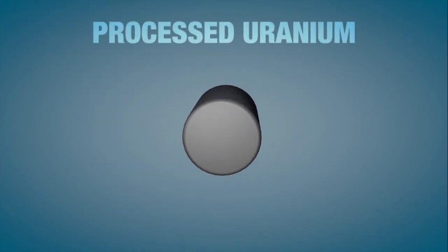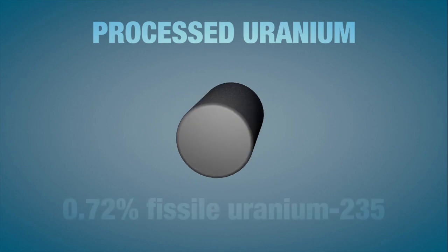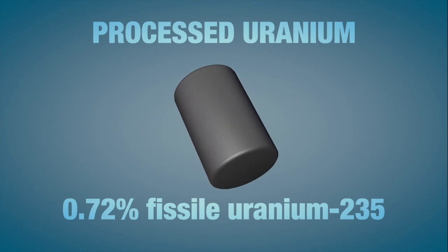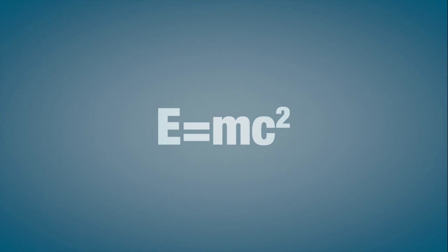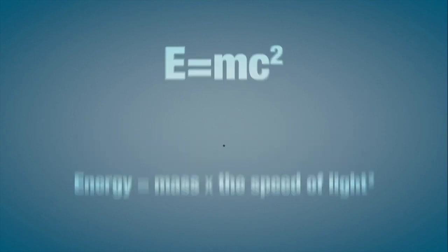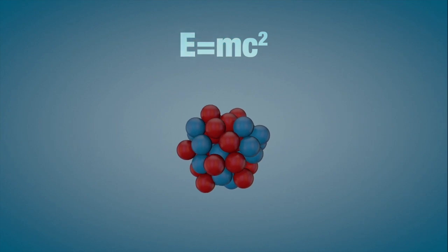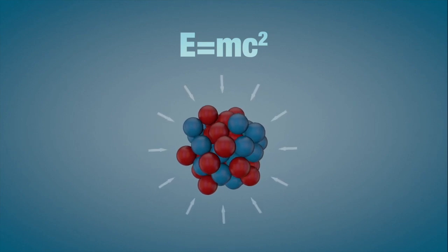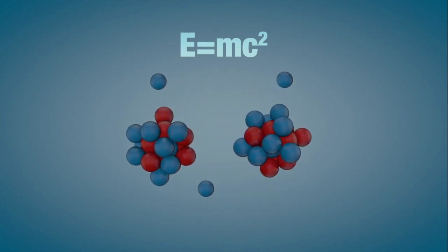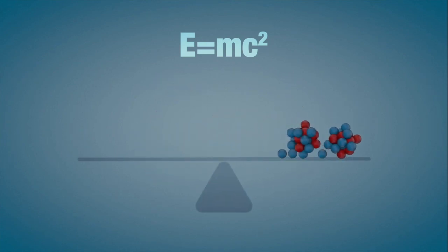At Lepreau, processed uranium is used as the fuel. Only 0.72% of this uranium is needed for fission to initially occur. You've probably heard of Einstein's famous equation, E equals mc squared. Energy equals mass times the speed of light squared. Well, this is where it becomes very practical. Einstein's formula tells us that mass and energy are different forms of the same thing. In that original uranium atom, energy was holding everything together, and it actually had a mass. Split the atom, and that energy is released.